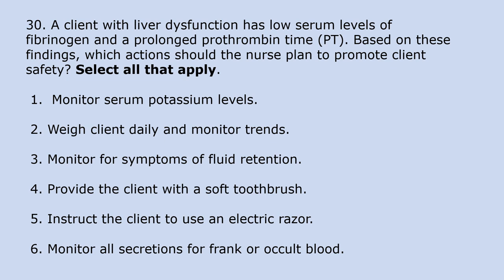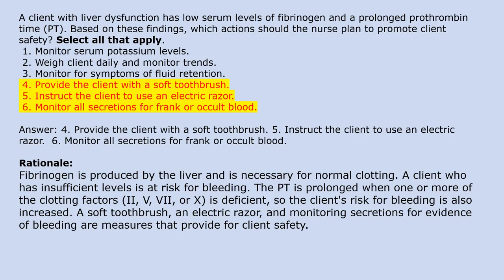A client with liver dysfunction has low serum levels of fibrinogen and a prolonged prothrombin time (PT). Which actions should the nurse plan to promote client safety? Select all that apply. 1. Monitor serum potassium levels. 2. Weigh client daily and monitor trends. 3. Monitor for symptoms of fluid retention. 4. Provide the client with a soft toothbrush. 5. Instruct the client to use an electric razor. 6. Monitor all secretions for frank or occult blood. Answer: 4, 5, 6. Rationale: Fibrinogen is produced by the liver and necessary for normal clotting. Insufficient levels and prolonged PT place the client at risk for bleeding. A soft toothbrush, electric razor, and monitoring secretions for evidence of bleeding are measures that provide client safety.